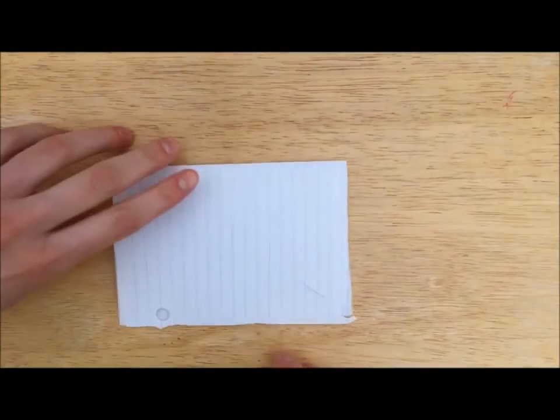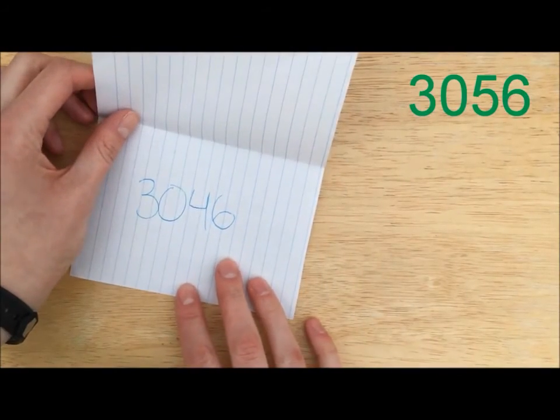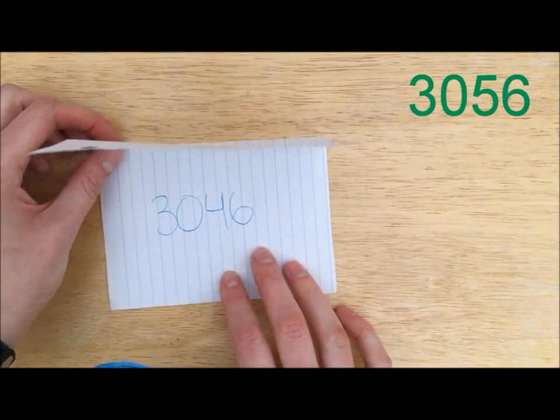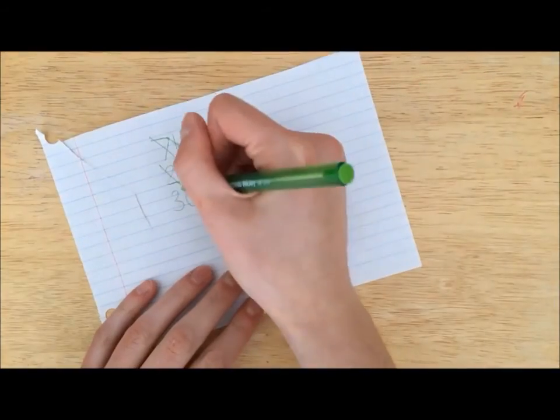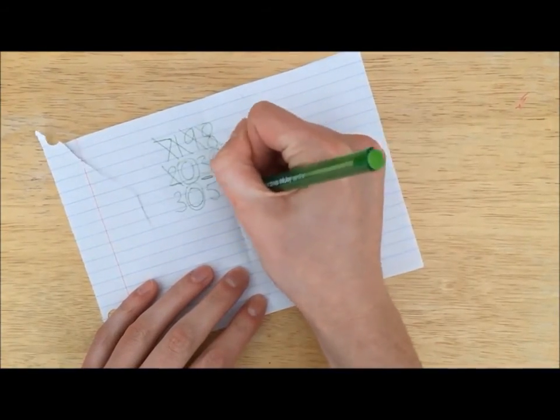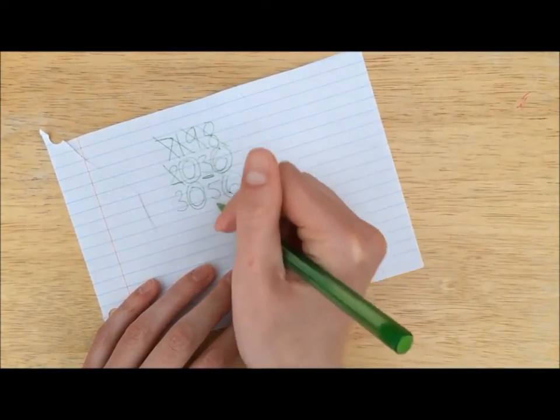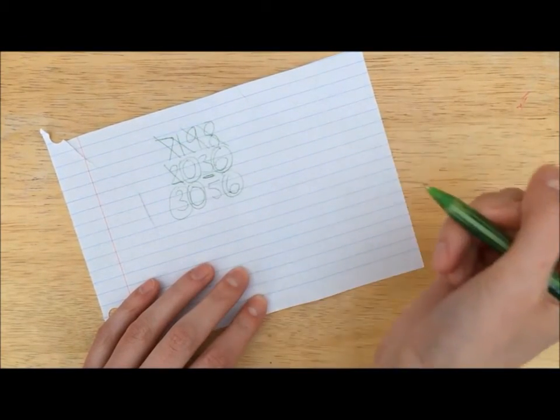The green player guesses 3,056. She is so close. All of her digits are hot except for the tens digit. She knows that her hundreds and ones places are still hot, and I let her know that her thousands digit is also hot, but the tens place is cold.